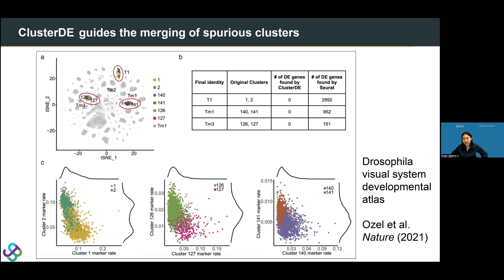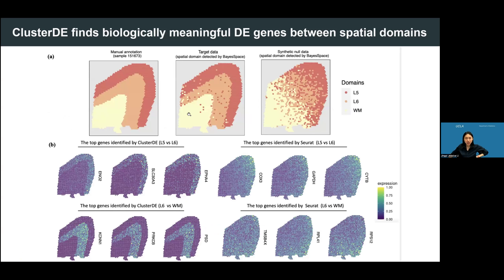We also applied ClusterDE to a Drosophila visual system developmental atlas dataset from a Nature paper with over 400 annotated clusters. Some clusters received the same cell type label from the authors — meaning they are biologically indistinguishable. For such ambiguous cluster pairs, ClusterDE finds zero DE genes, while Seurat finds thousands. This confirms that ClusterDE can help users decide whether two clusters should be merged by checking whether any reliable DE genes exist between them.